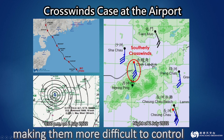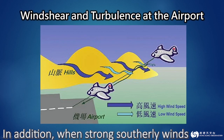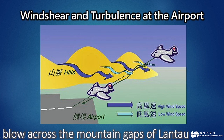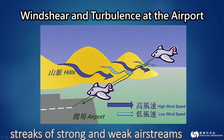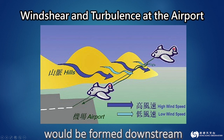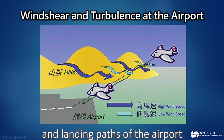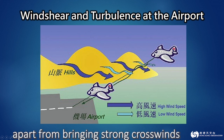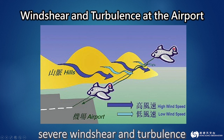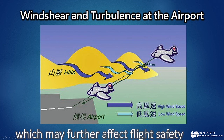In addition, when strong southerly winds blow across the mountain gaps of Lantau, streaks of strong and weak airstreams would be formed downstream. When these airstreams cross the departing and landing path of the airport, apart from bringing strong crosswinds, they can sometimes produce severe wind shear and turbulence, which may further affect flight safety.